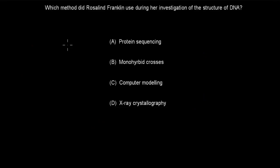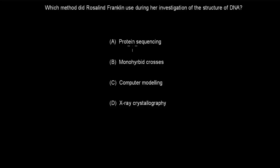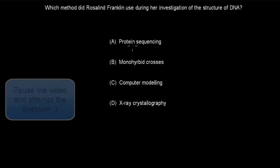Next question. Which method did Rosalind Franklin use during her investigation of the structure of DNA? A. Protein sequencing. B. Monohybrid crosses. C. Computer modeling. D. X-ray crystallography. Pause the video and attempt the question.